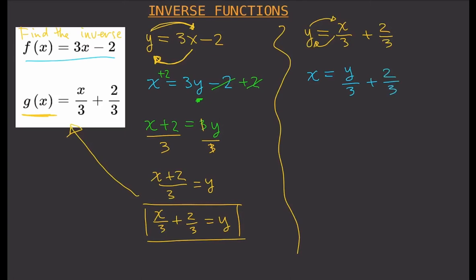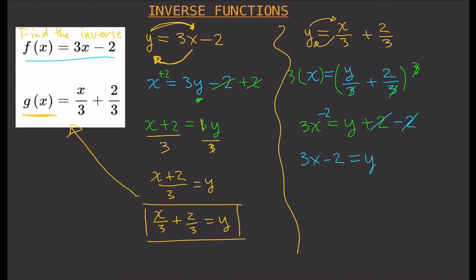Now let's isolate y. First, multiply both sides by 3 to cancel out the denominators. On the right side, y over 3 times 3 cancels to give y, and 2 thirds times 3 cancels to give 2. So we have 3x equals y plus 2. Then subtract 2 from both sides, and the 2 cancels, leaving y equals 3x minus 2.